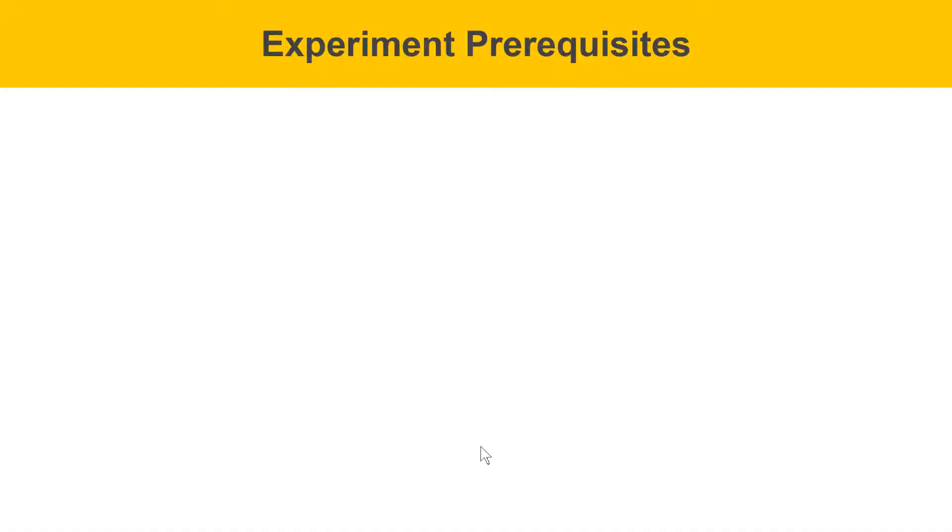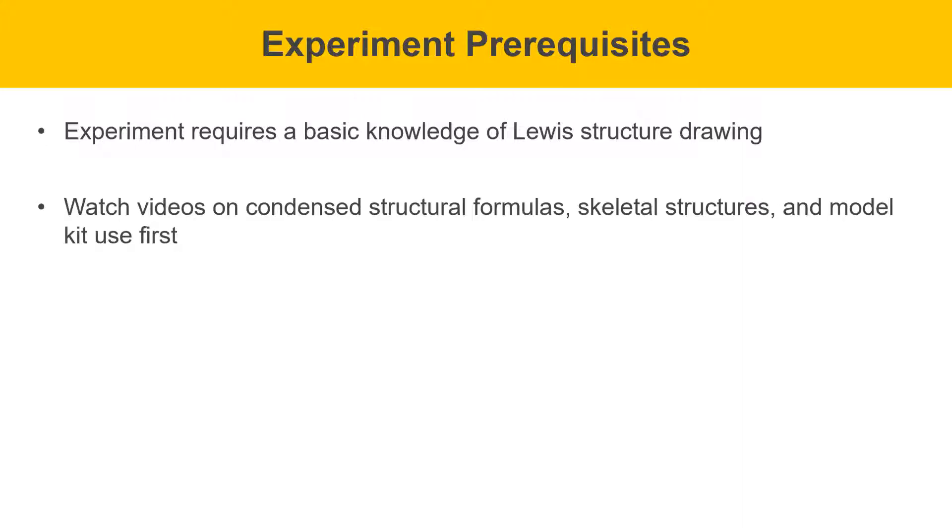To understand what's going on in this experiment, you'll need a basic knowledge of Lewis structure drawings. You don't have to be a pro at this, but it is important to know about the octet rule and the number of bonds that each atom typically makes. For example, carbon is a group 4 element, it makes 4 bonds. Nitrogen is a group 5 element, it makes 3 bonds and has 1 lone pair. If you're unsure of how that works, you should go back and review Lewis structures first. The other thing you should do is watch my videos on condensed structural formulas, skeletal structures, and model kit use first.